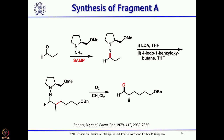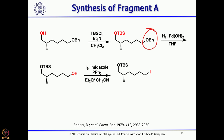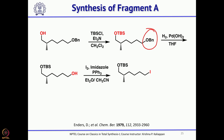The aldehyde was reduced and protected as a TBS ether to give Fragment A. The benzyl group also had to be removed and converted to a leaving group — the benzyl ether was converted to iodide by treating with iodine, imidazole, and triphenylphosphine. The Wittig salt was thus prepared.